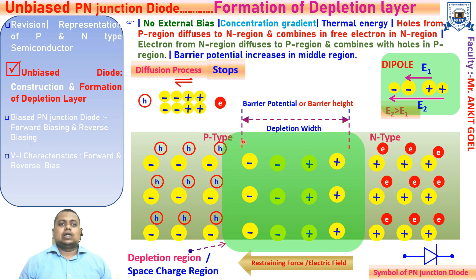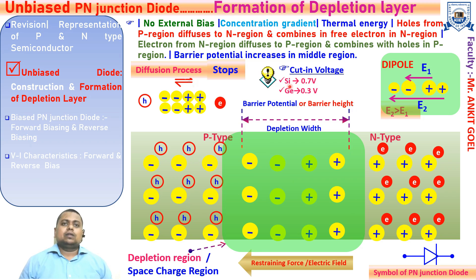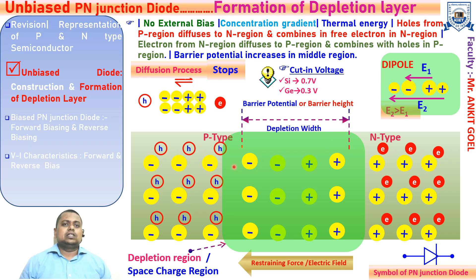This region, denoted by the green color, is also called the space charge region because it consists of negatively charged and positively charged ions. The width of this region is called the depletion width, and it creates a potential or barrier potential which is required by the majority carrier to cross this junction. For silicon semiconductor, this barrier potential is 0.7 volt, while for germanium it is 0.34 volt. This is also called the barrier height — this much barrier potential must be overcome for the flow of majority charge carriers in the P-N junction.